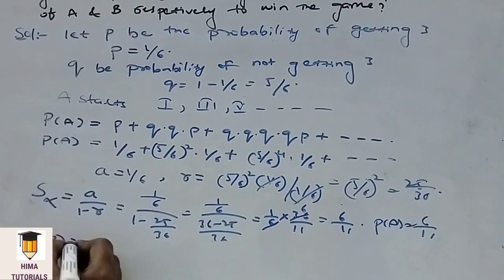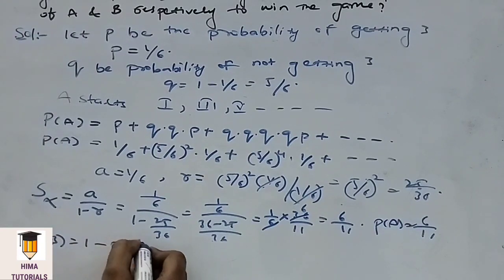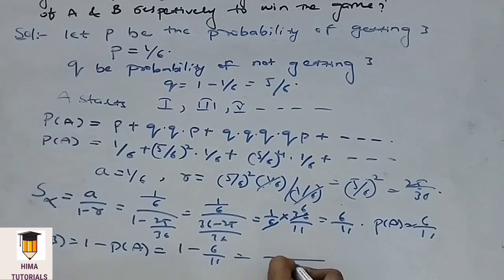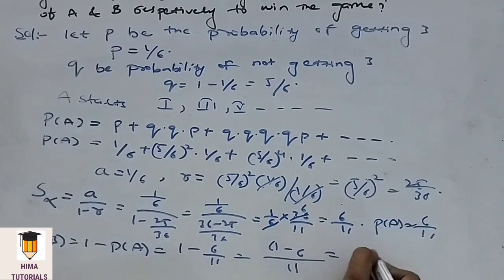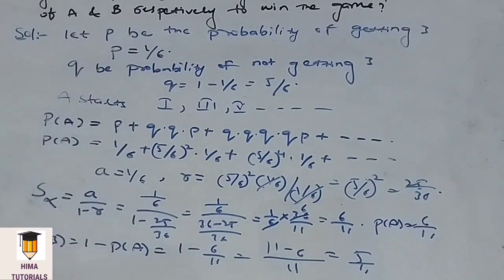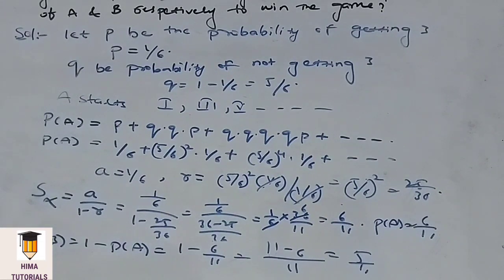We need to find the probability of B. P of B equals 1 minus P of A, that is 1 minus 6 by 11. Taking LCM as 11: 11 minus 6 equals 5 by 11. So the probability of B winning the game is 5 by 11. I hope it is clear. Please make a note of it.